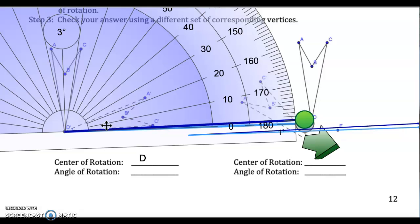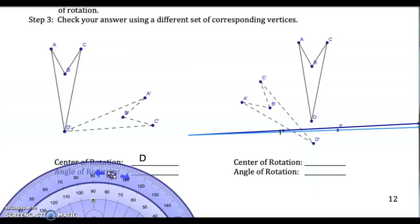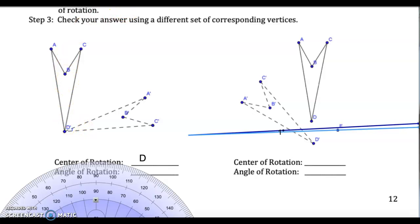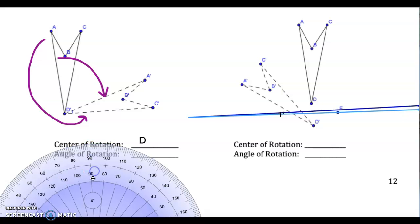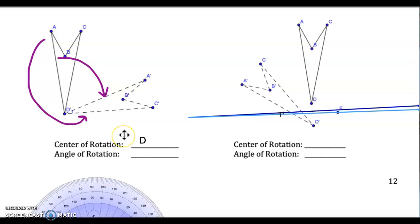My angles of rotation always go counterclockwise. So when you're setting up your protractor, you have two choices. Your angle of rotation can either be 280 degrees — because remember I'm going counterclockwise — or you can say negative 80 degrees. So I did a rotation — I use a capital R. I'm rotating it about point D. You can say either 280 degrees or negative 80 degrees, your choice. Just make sure that you're not saying 80 degrees positive.